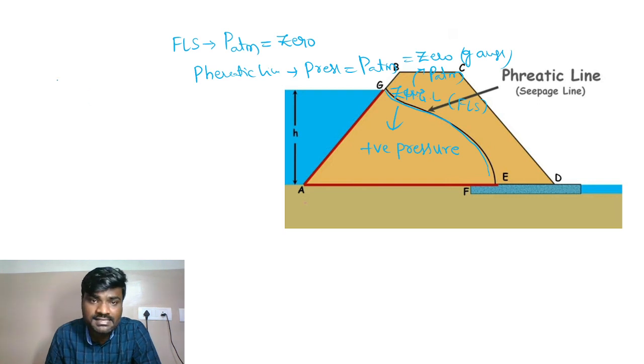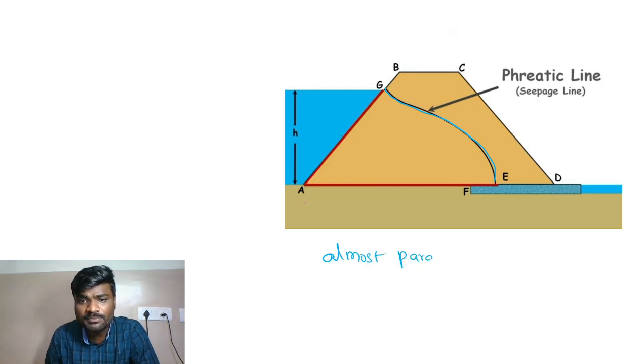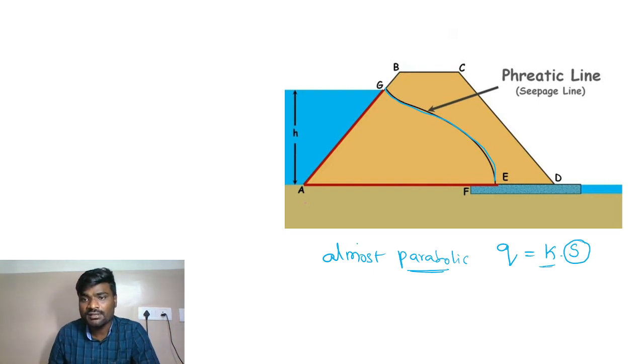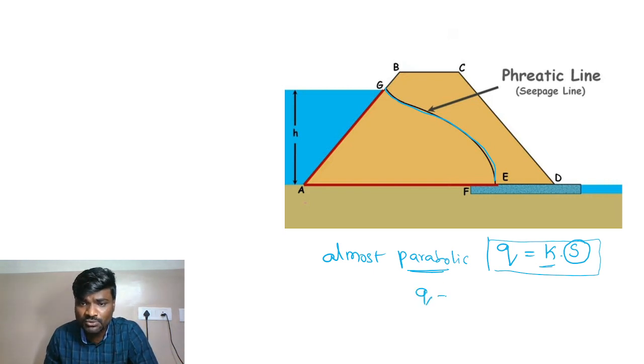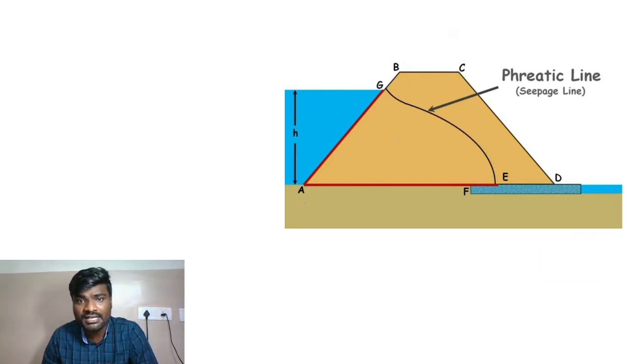Coming to the shape of the line, the phreatic line shape is parabolic, almost parabola but not exactly parabola. This parabolic shape allows us to calculate discharge using the equation Q equals k times s, where s is the focal distance. K is the permeability of soil. This formula helps calculate the seepage quantity passing through the dam body, similar to how in flow nets we calculate Q equals k h n_f by n_d. This equation is exclusively for earth dams to calculate seepage quantity.